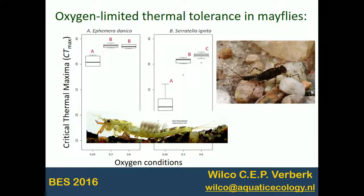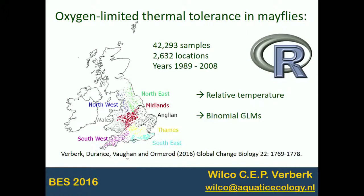There were more than 40,000 samples and more than 2,000 locations — this really prompted me to learn R, which was a good time investment. We used relative temperature to account for spatial and temporal fluctuations, delineating streams that were relatively warm or relatively cool. We also used binomial GLMs because most samples were nested within locations, so they're not independent observations.